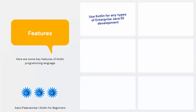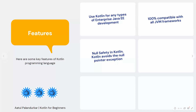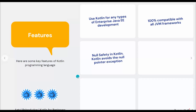Looking at some features of Kotlin: you can use Kotlin for Java EE enterprise application development, and it is 100% compatible with all JVM frameworks. Kotlin also provides null safety — it avoids the NullPointerException, which is a common problem developers face. I was discussing null safety, so let me give you a simple example of that.